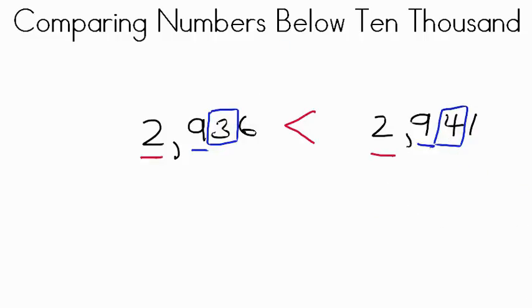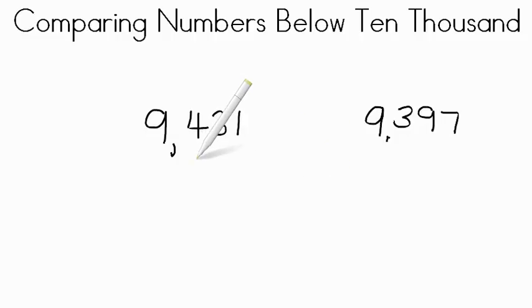Let's try another. Okay, what symbol are we going to put in here? We have 9,431, 9,397. Well they both have 9,000, so where do we go next? That's right, we go to the hundreds and see if those are the same. Well we have a 4 here and we have a 3 here. Do we need to look at the tens? Do we look at the ones? We don't have to do either because we can see right away in the hundreds that one is greater than the other.